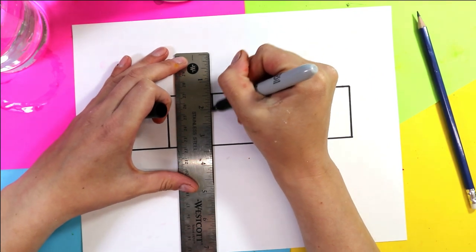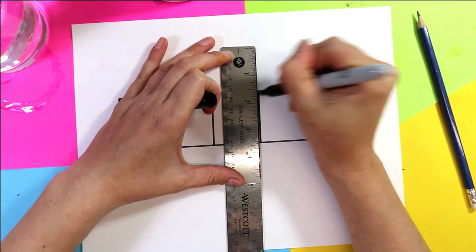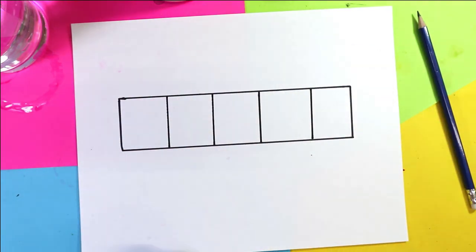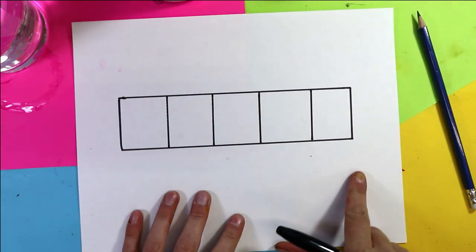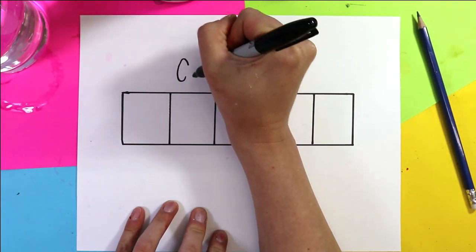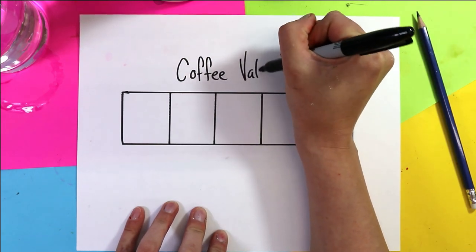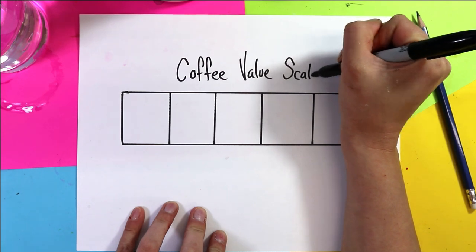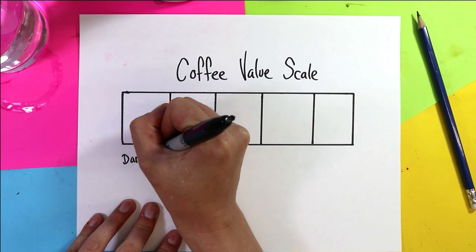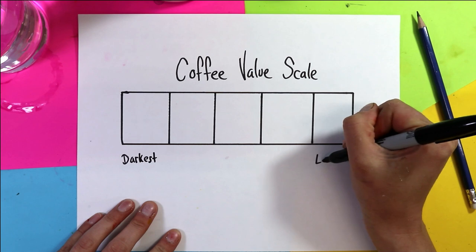Simple value scale and now I'm just going to separate this into five sections. And we can imagine that on one side we're going to have our darkest values and the other side will be the lightest values. So that's my value scale and no I did not measure any of it. So this is going to be called the coffee value scale. This side will be our darkest value of coffee and this will be the lightest.